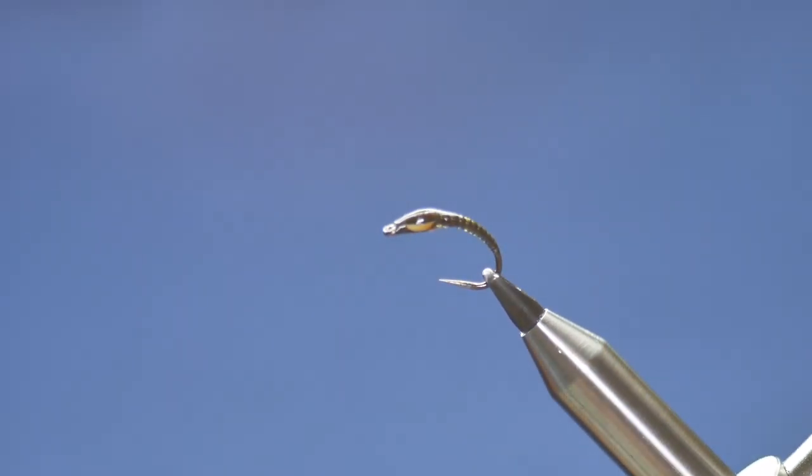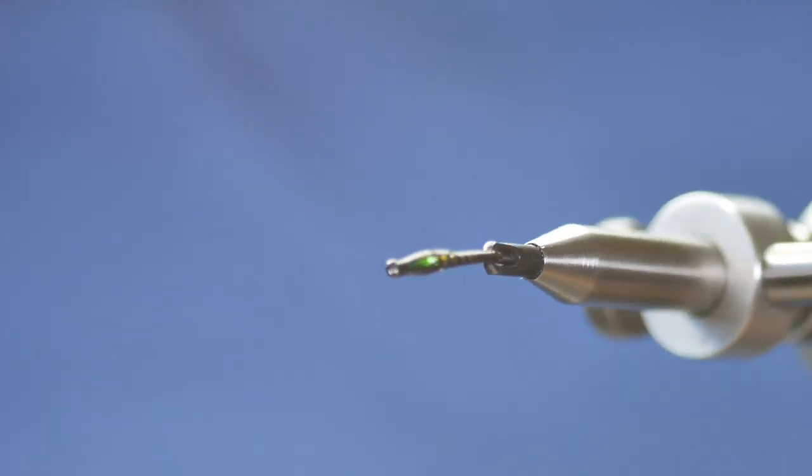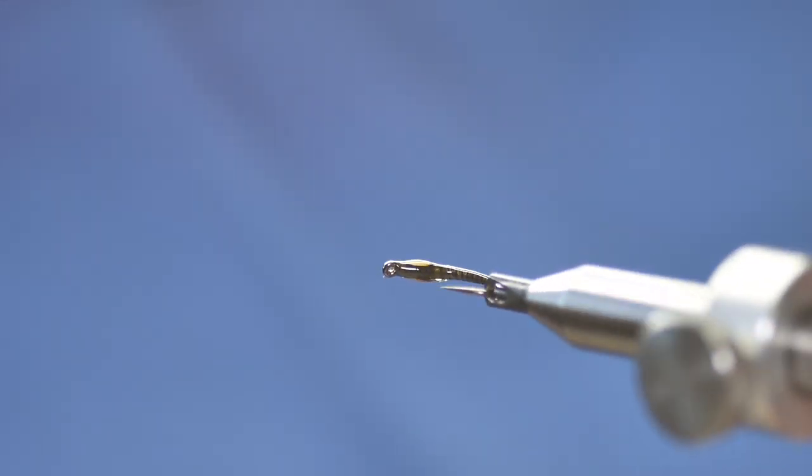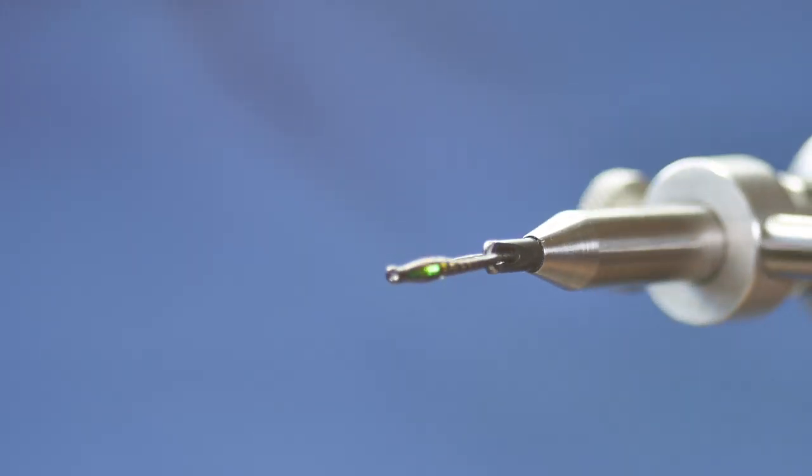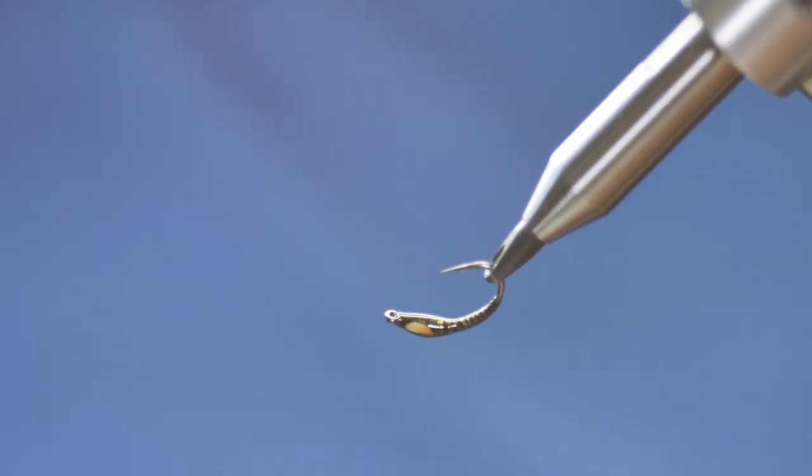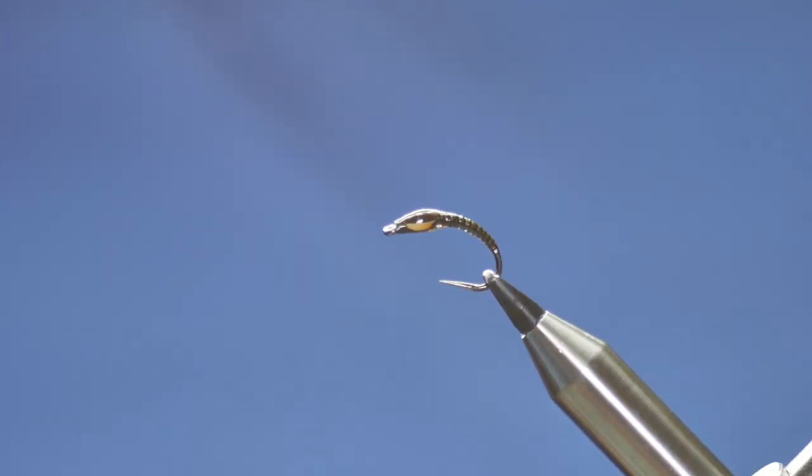And there we go. At the end of the day, it's just an olive buzzer, but it looks really nice. I think it catches more fishermen than it will do fish, to be honest. I feel a bit guilty because I want the channel to be about flies that catch fish. I'm sure this will catch fish, but would I tie up 20 or 30 of them? No, maybe five or six. I've got a buzzer pattern I'm very confident with, and I'll share that with you next time.